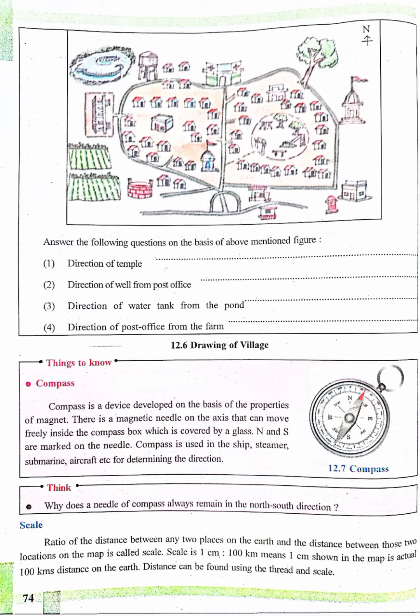The direction of the temple: The temple is in the east. Direction of well from post office: The direction of well from post office is west direction. Direction of water tank from the pond is east, and the direction of post office from farm is also east.